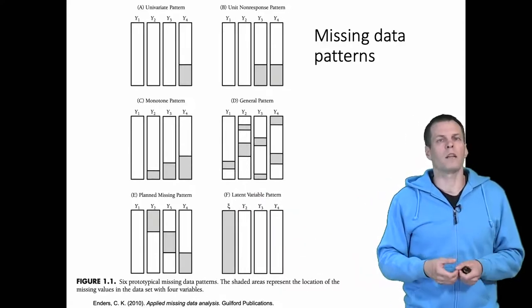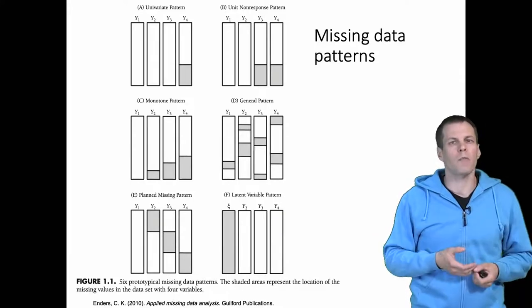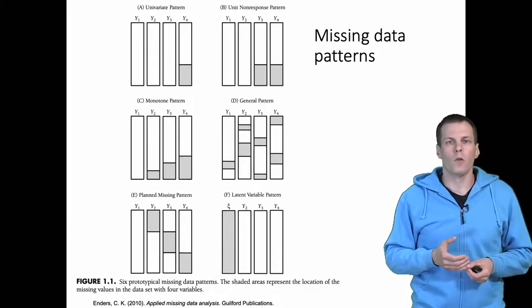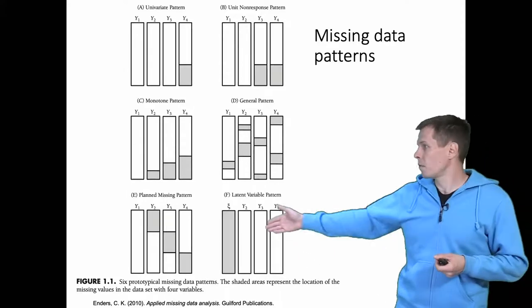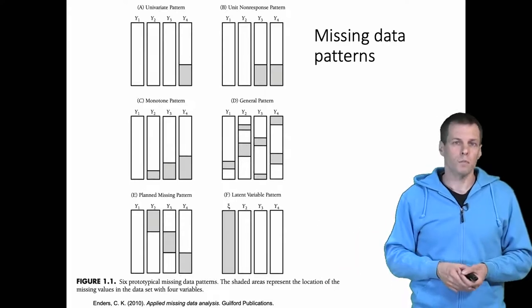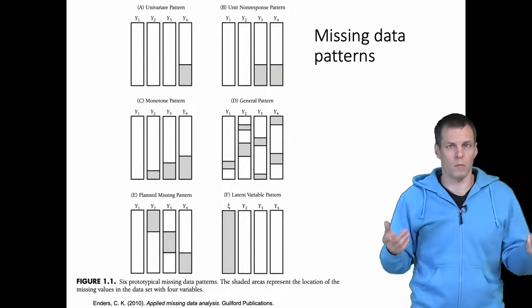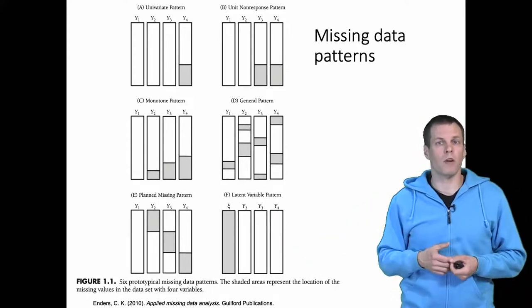The final pattern identified by Enders is the latent variable pattern. The idea of latent variable is that it's simply a variable for which we don't have any data, and this could be because the latent variable is something that we simply cannot measure with the survey or it will be unethical to collect. Then we don't have data for a variable, we need to use latent variable techniques.